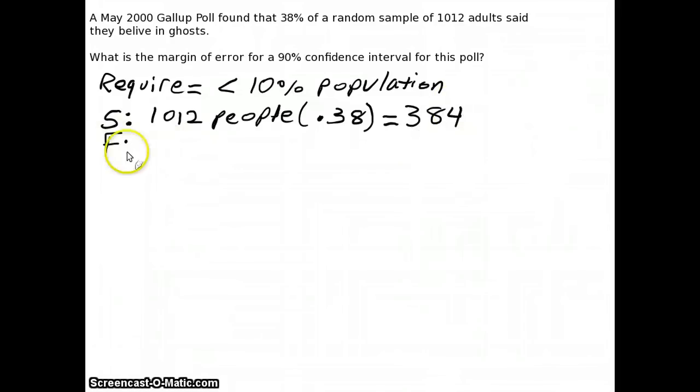And when we look at the failure rate here, we're going to do the exact same idea here of saying that 1,012 people that do not believe in ghosts. Well if 38% believe in ghosts, then I know that 62% do not believe in ghosts. And if we do that calculation very quickly on our calculator here, we actually see that there's roughly about 627 people that do not believe in ghosts. So we definitely have 10 successes and 10 failures, more than that. So from there, we can go on to the next part of the problem.